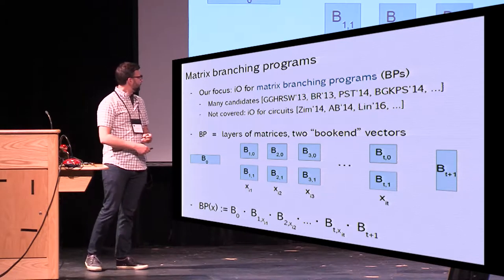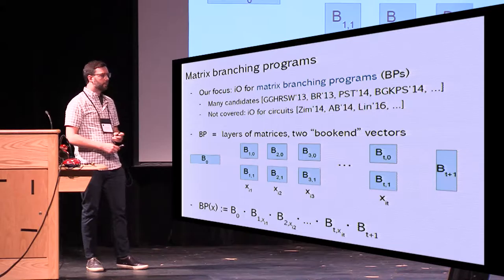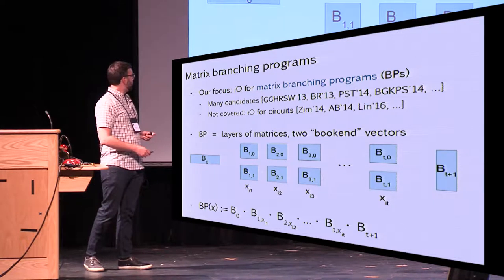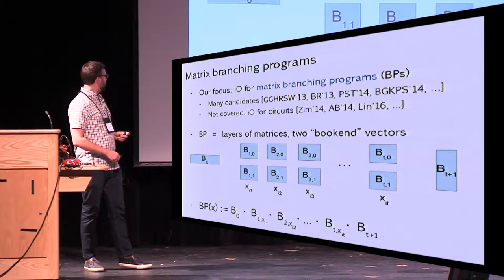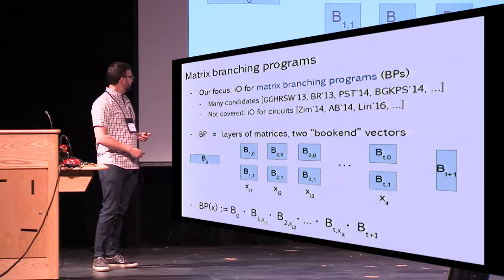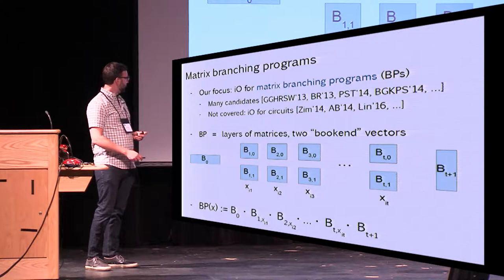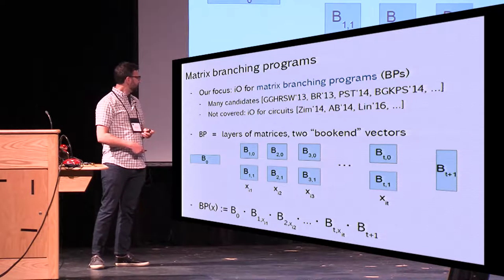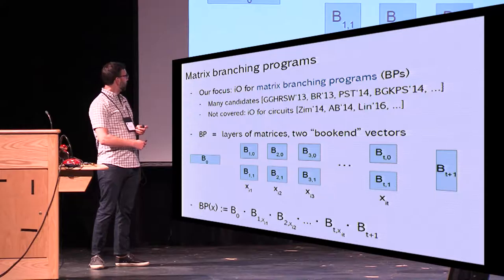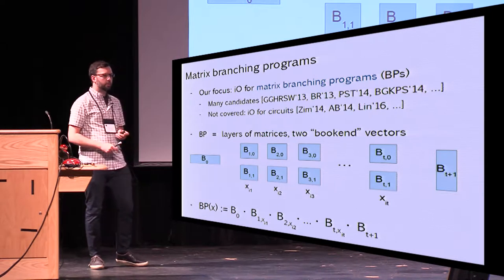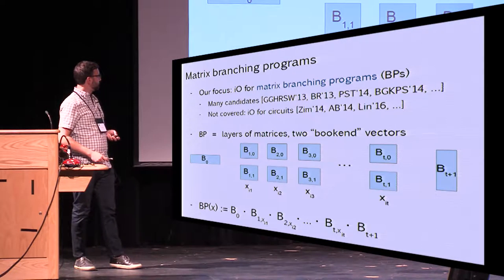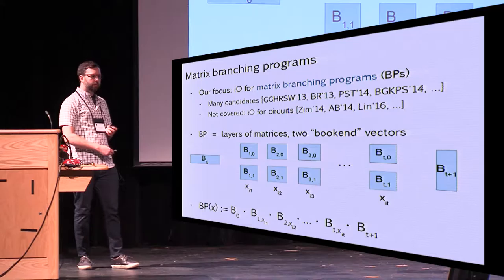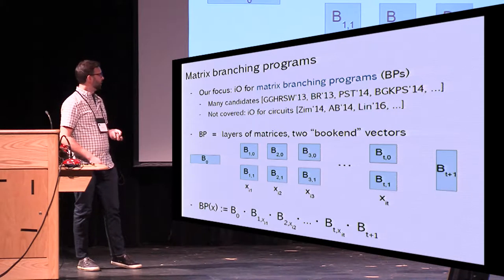A matrix branching program is basically a set of matrices sorted into layers, with two bookend vectors. Each layer is associated with some input bit. To evaluate the matrix branching program on some input X, you always have the first and last bookend vectors, and for the middle ones you pick the matrix corresponding to the value of the bit you're reading. Each input selects a subset of the matrices and you multiply through. The output is zero or one depending on whether this product is zero or not.